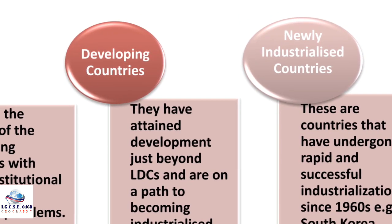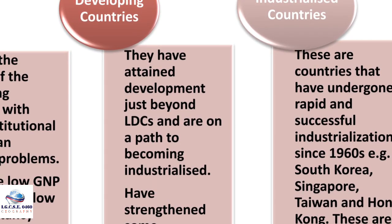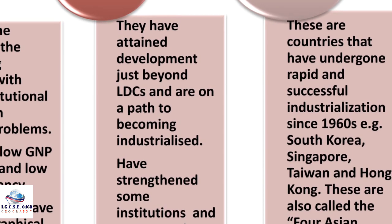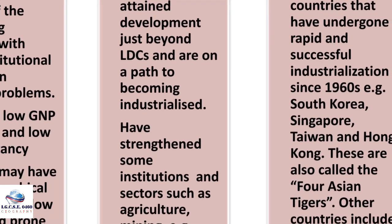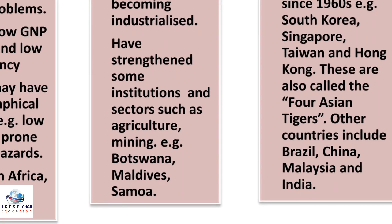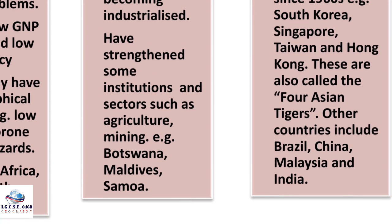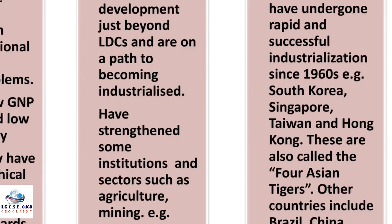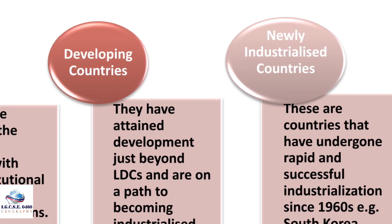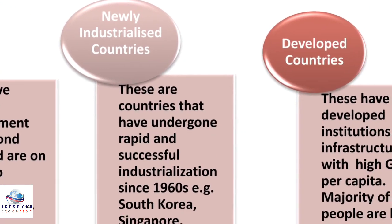Developing countries have attained development just beyond LDCs and are on a path to becoming industrialized. They have strengthened some institutions and sectors such as agriculture and mining. Examples include Botswana in Africa, the Maldives, and Samoa. You may look at an atlas to locate some of these countries.